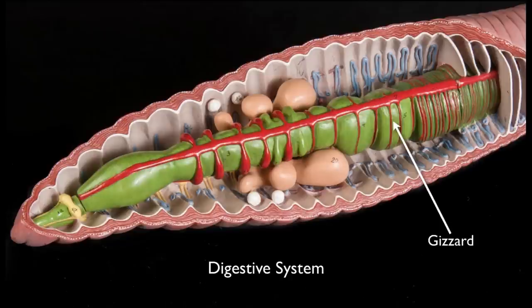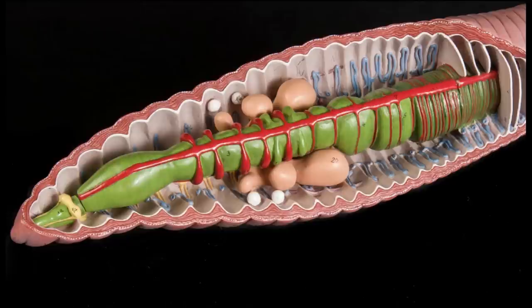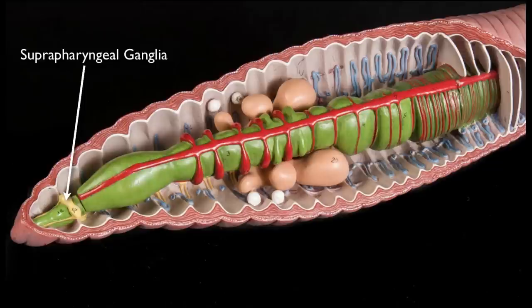Once the gizzard has completed its task, the food is passed into the intestine, where chemical digestion and absorption occur. Several other structures are visible in this view. At the anterior end of the earthworm, sitting atop the digestive tube, are a pair of suprapharyngeal ganglia. A ganglion is a mass of nerve cell bodies and fibers. The suprapharyngeal ganglia are the earthworm's brain, such as it is.